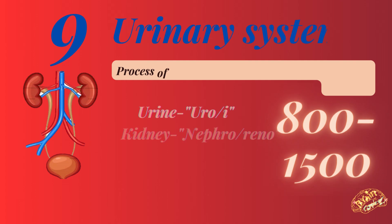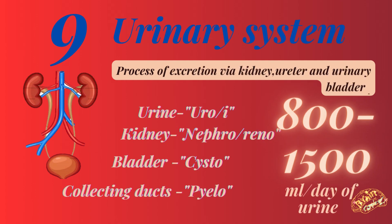Number nine: the urinary system. It involves the process of excretion via the kidney, ureter, and urinary bladder. Urine is denoted as 'uro', kidney as 'nephro' or 'reno', bladder as 'cysto', and collecting ducts as 'paiello'. Daily urine output is 800 to 1,500 milliliters per day.